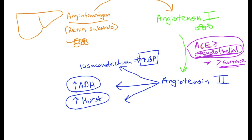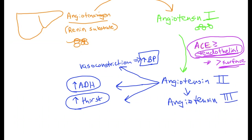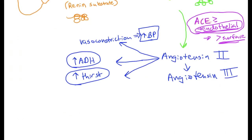As angiotensin 2 travels in the bloodstream and goes through the liver, it gets broken down into angiotensin 3. Angiotensin 3 is a metabolite of angiotensin 2, and angiotensin 3 then goes on to stimulate the secretion of aldosterone in the adrenal cortex.